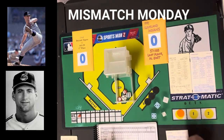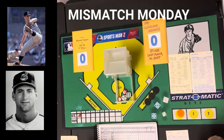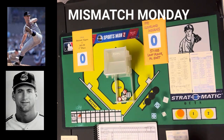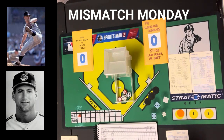Hello, sports fans and Strat-O-Matic fans. I'm here with another Mismatch Monday. Today it's going to be a little different — I'm going back to the basics. The matchup today is the 1968 Tigers against the 1991 Cleveland Indians. The 1968 Tigers were 103-59 and the '91 Indians were 57-105.